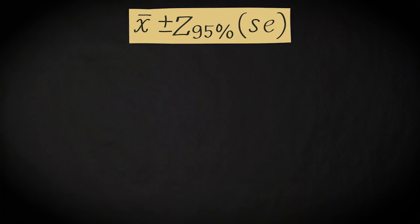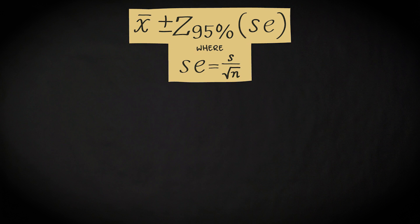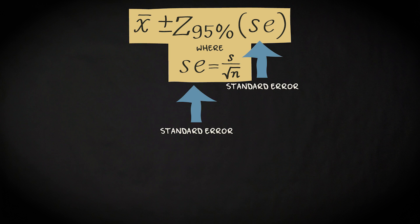This leads to the following formula: x-bar plus and minus the z-score for the 95% confidence level times the estimated standard deviation of the sampling distribution of the sample mean, which equals the sample standard deviation divided by the square root of the sample size. We call this estimated standard deviation of the sampling distribution the standard error. But because we now estimate the standard deviation, we add extra error into the computation.